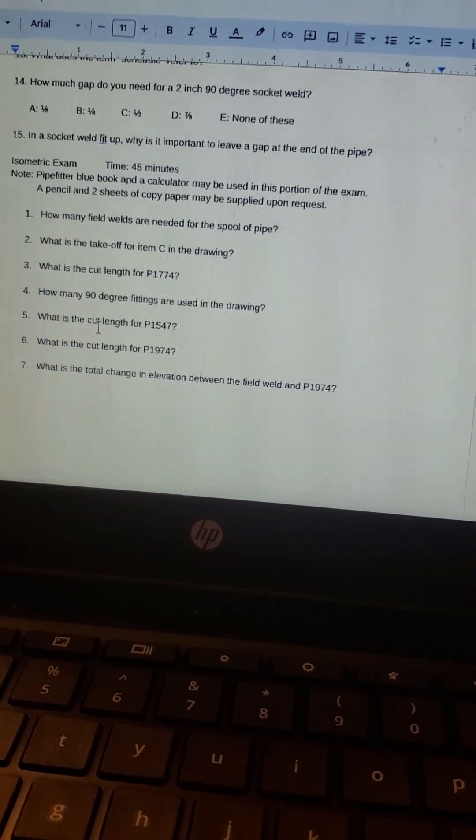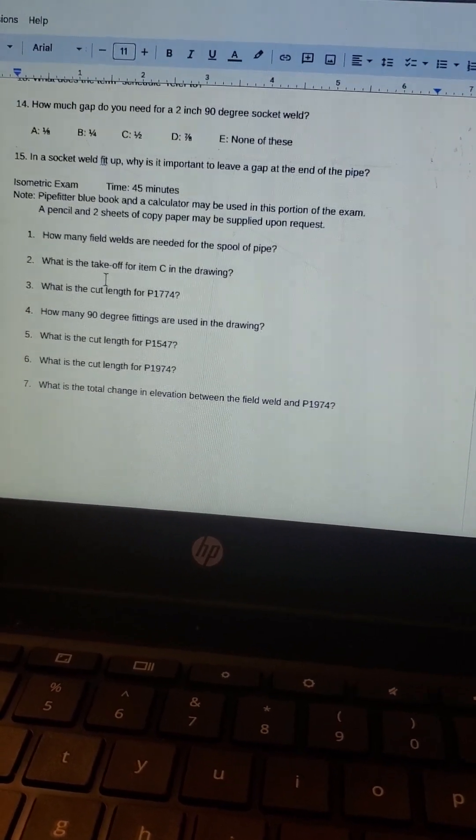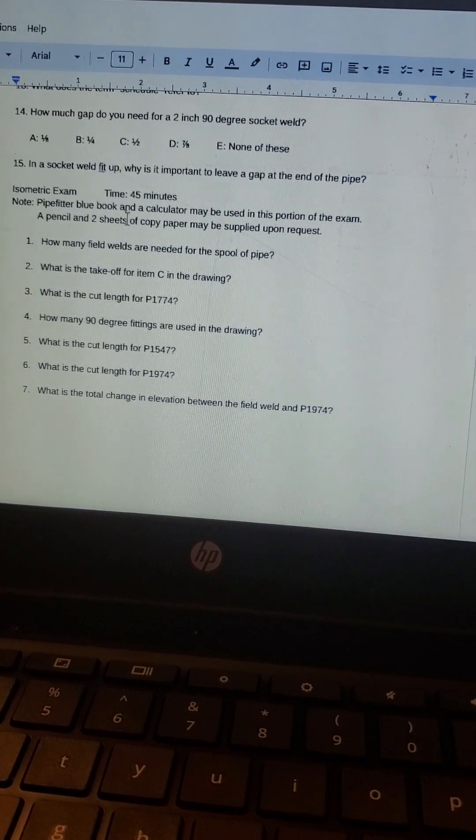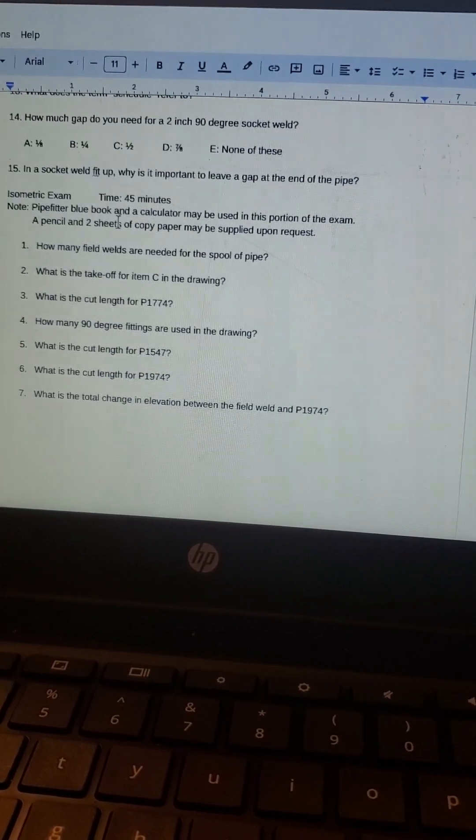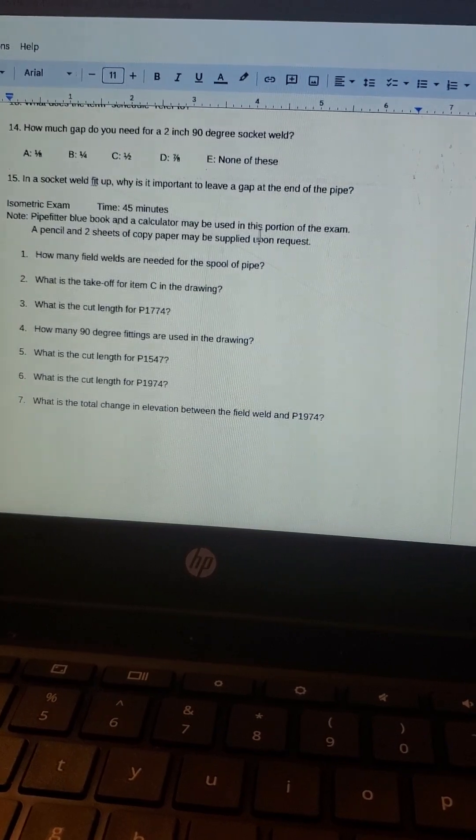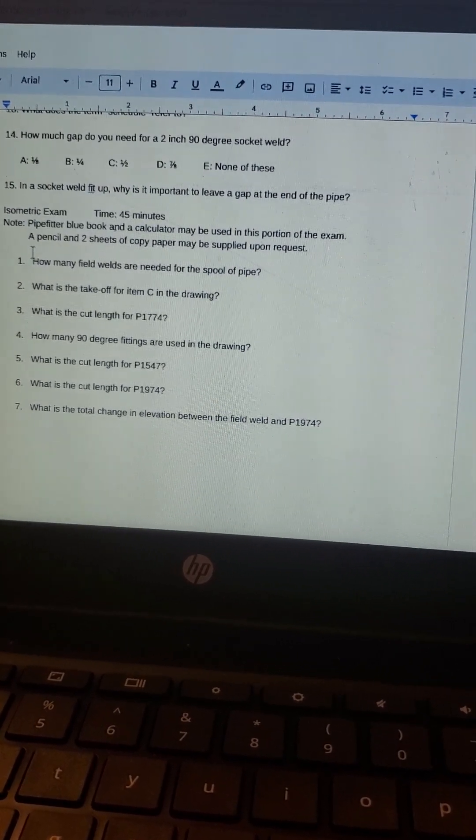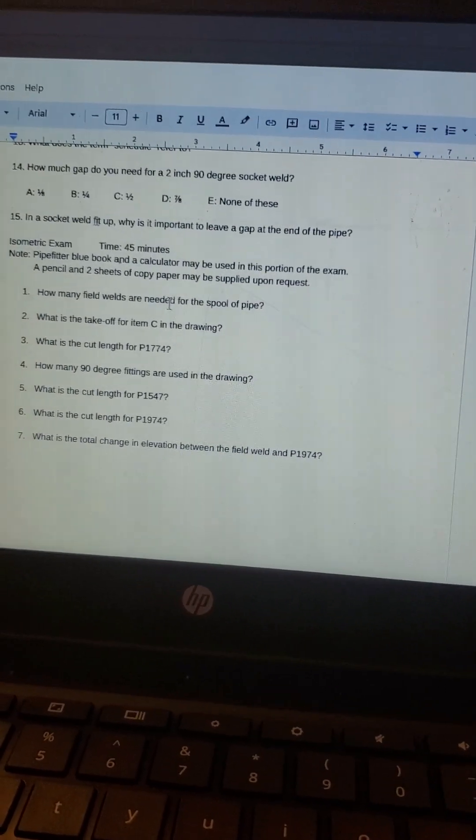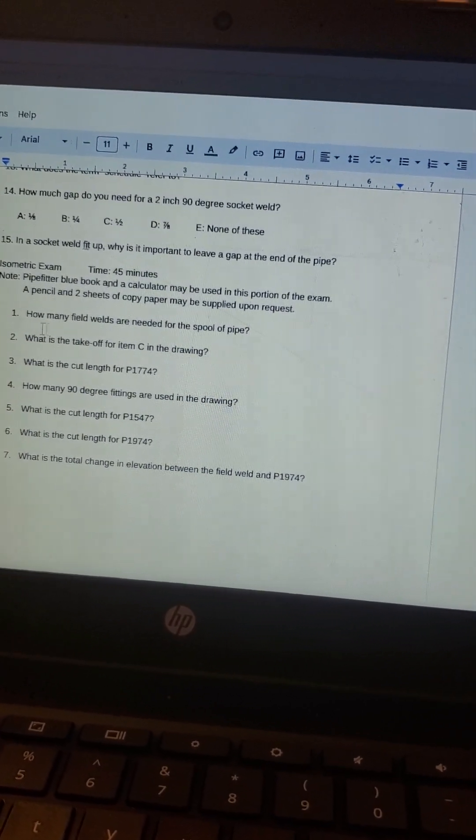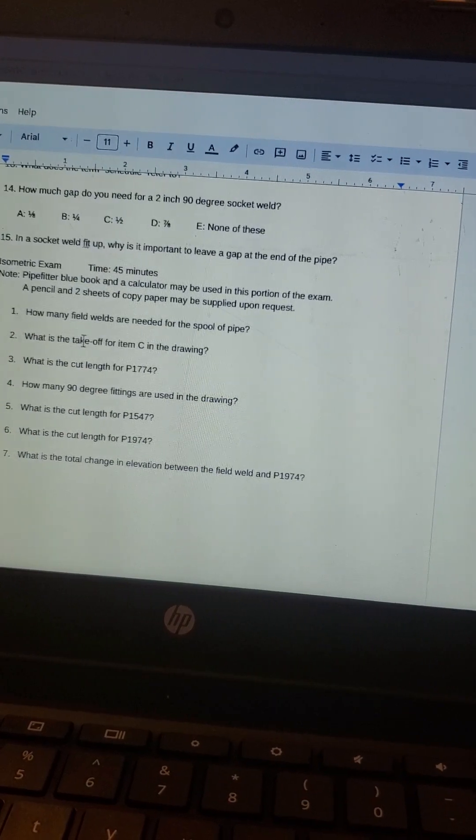This particular part of the test is designed to be used with some type of drawing, also called an ISO. It's giving you 45 minutes and this is pretty common. It says pipe fitter blue book and a calculator may be used in this portion of the exam. A pencil and two sheets of copy paper may be supplied upon request.